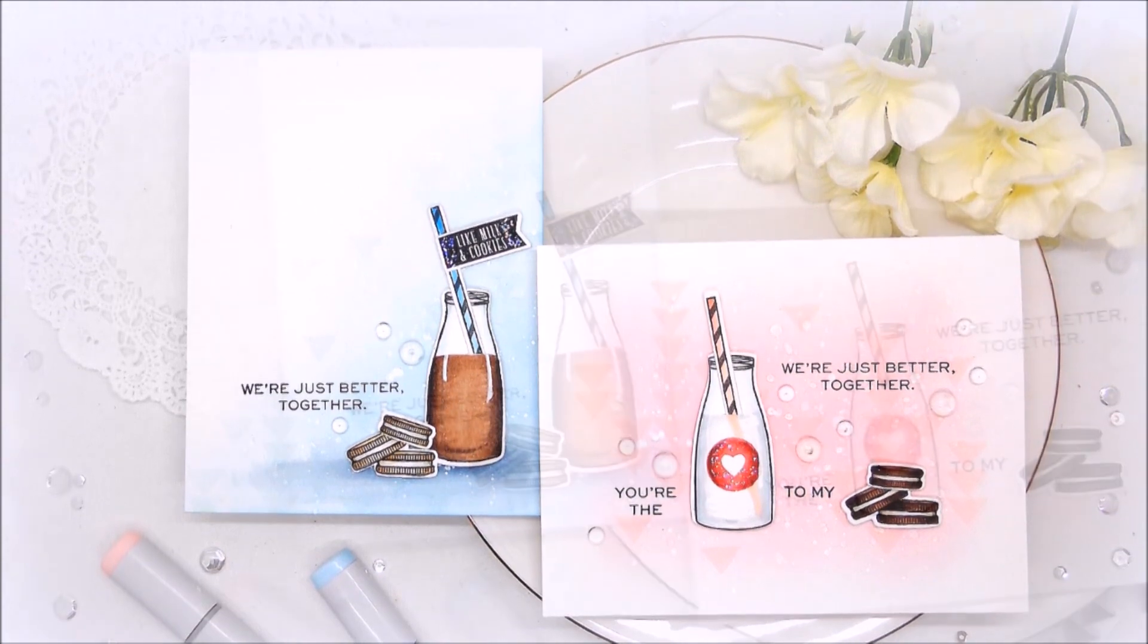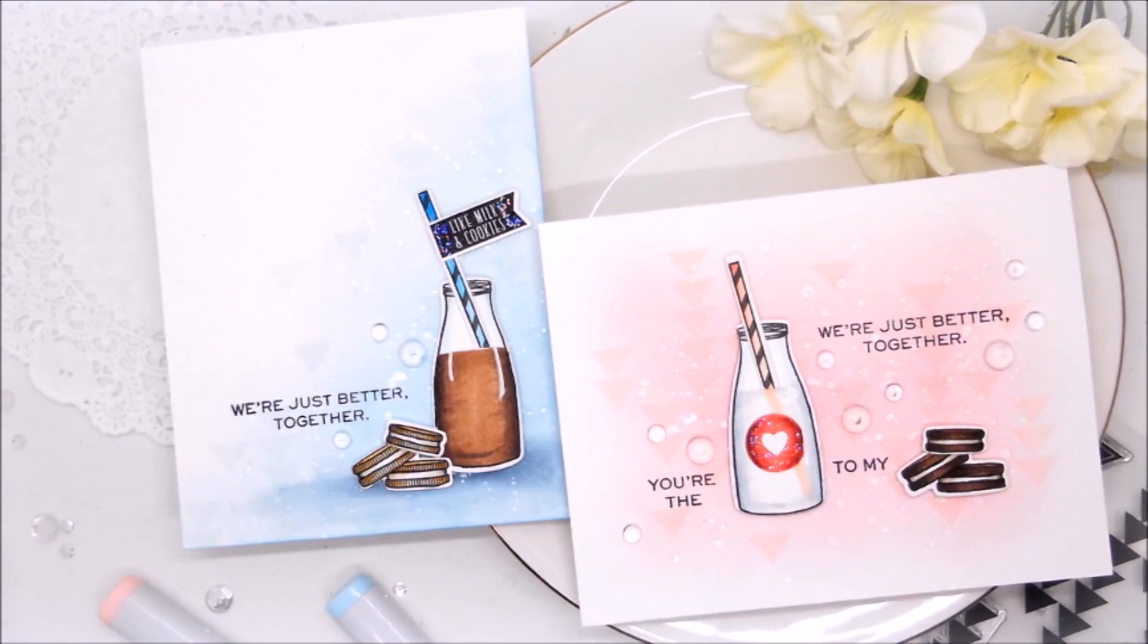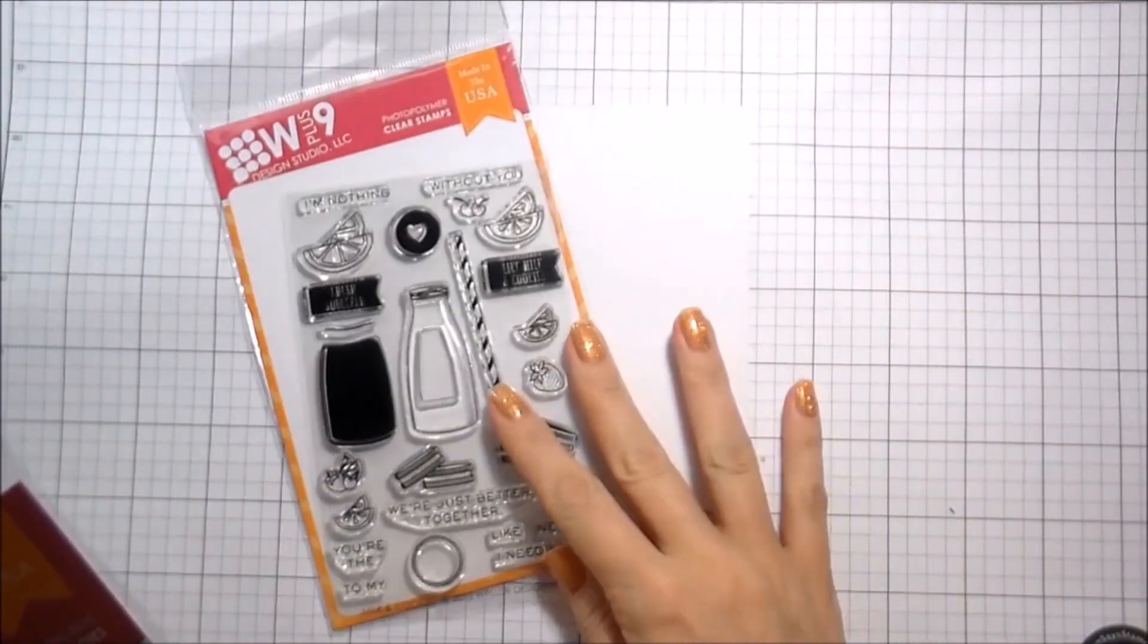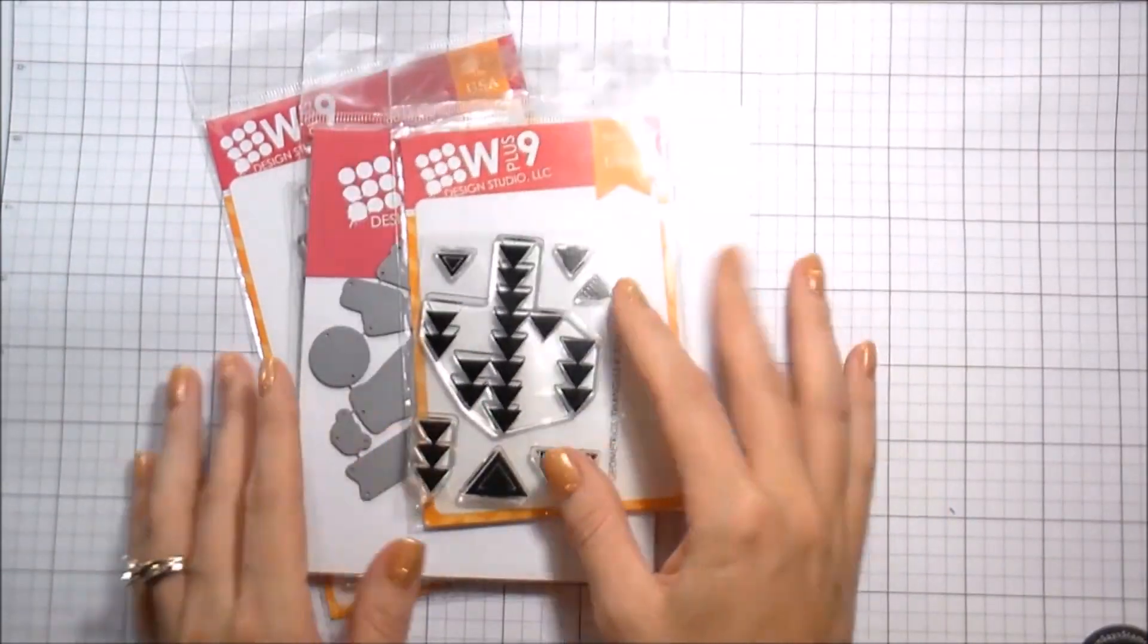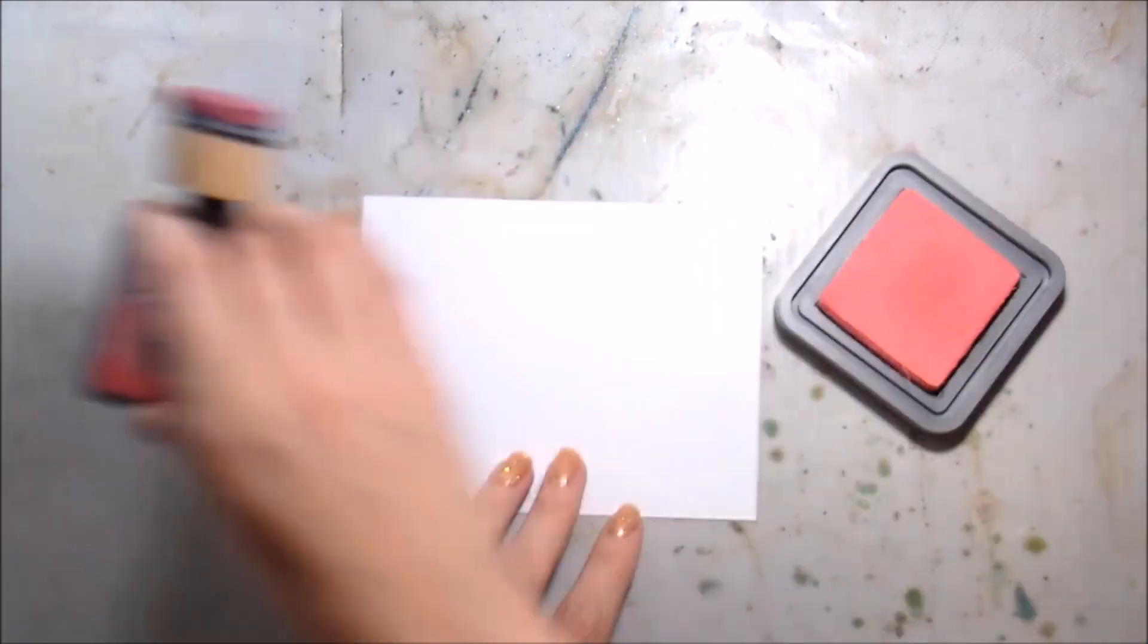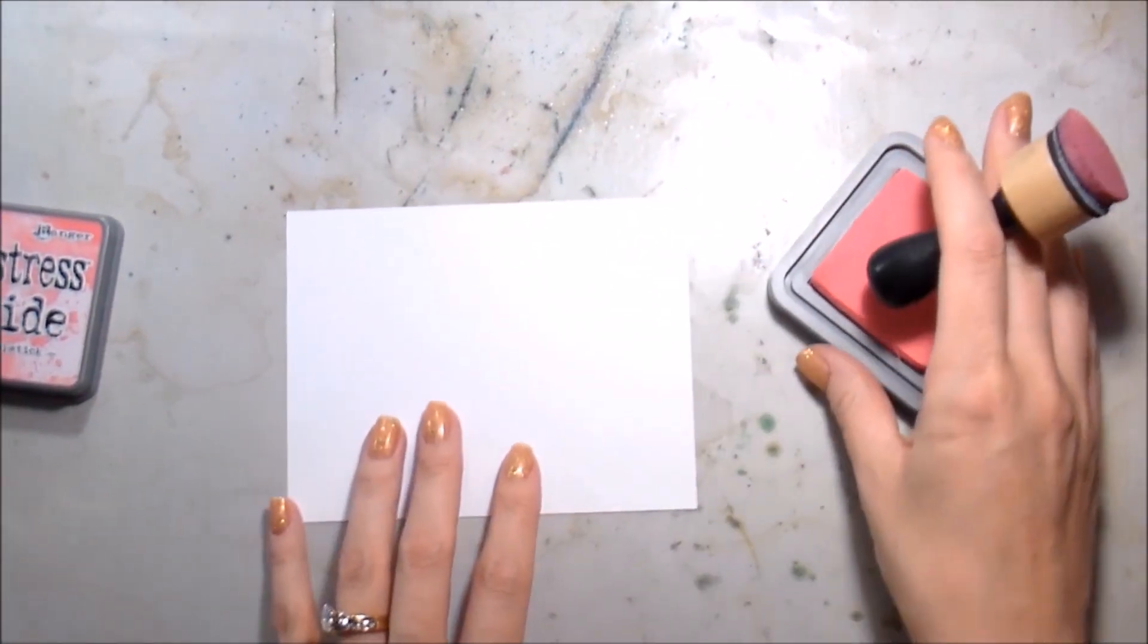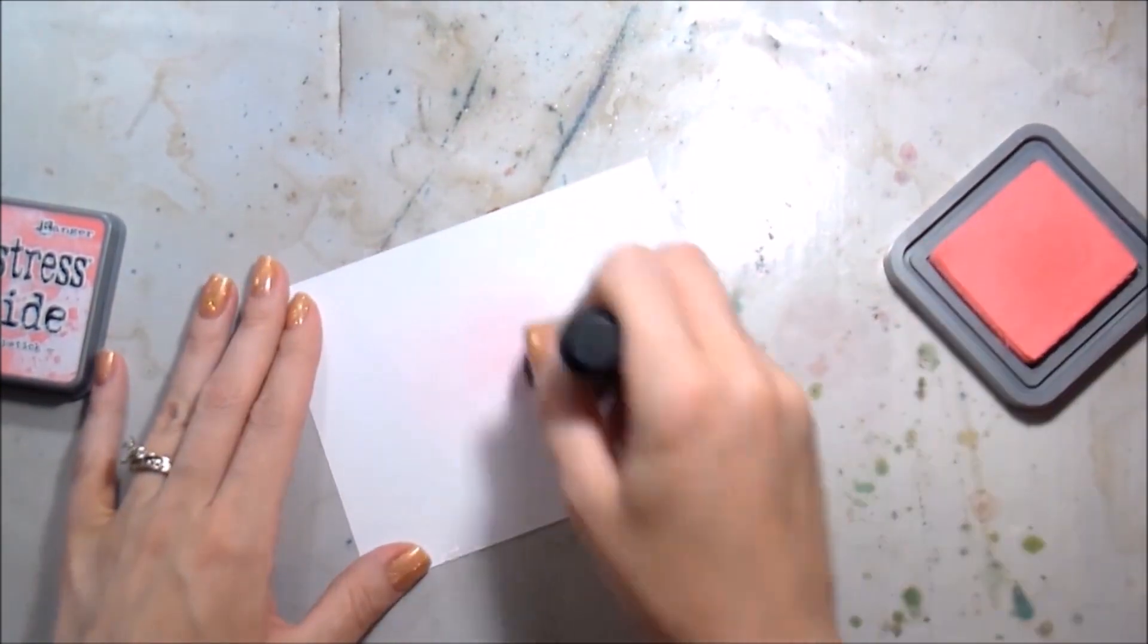Hi guys, it's Kelly Latavola here and I'm back with another video for W+9. Today we're going to be using some older stamp sets that I think are still super cute. This is the milk and cookie stamp set and the dies, and then I also have the Just Geometrics Triangles that I'm going to use to create a background.